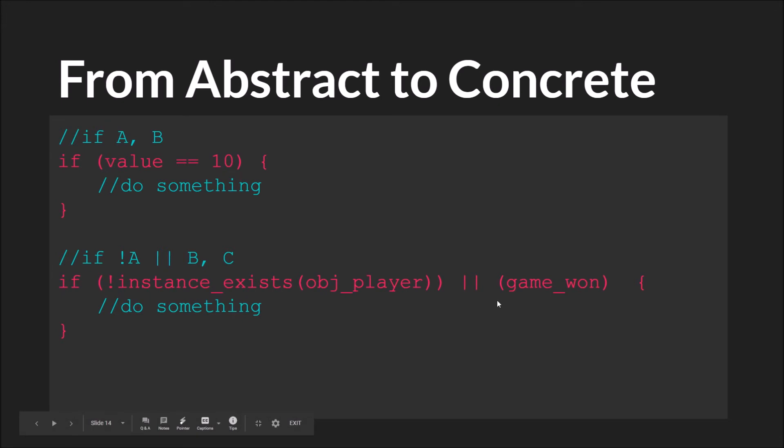Down here we have something even more complicated. We have if not instance exists object player, or game won, do something. So this might be a very simple condition to check whether a game should end. So if not A or B, and it's pretty easy to evaluate. If B is true, then we'll come down here. Or if A is false, then we will come down here. So if either A is false or B is true, we're going to do something.